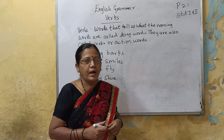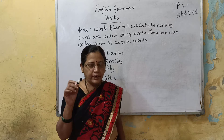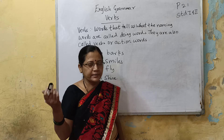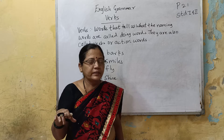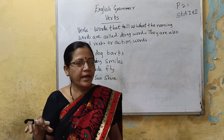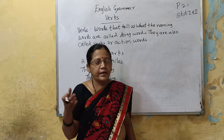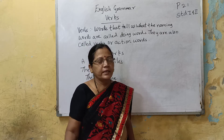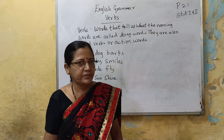What is verb? You are writing, dancing, playing — all these are action words. Reading, jumping, running — all these are action words.